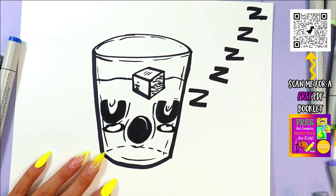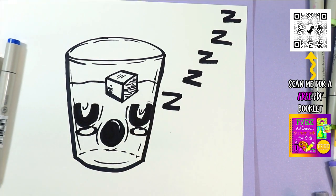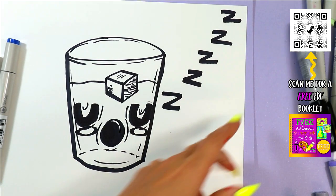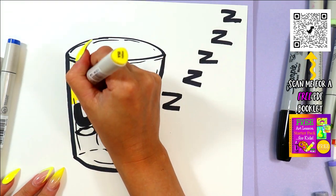Now it's sleeping so we always use a Z to represent sleep. So draw some Z's. You got your Z's. Alright. Let's color our lemonade. I'm gonna color my lemonade yellow because mine is lemon lemonade.